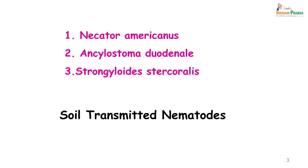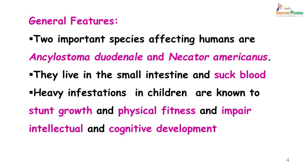All three of these worms are basically soil-transmitted nematodes. The two important species which affect humans are Ankylostoma duodenale and Necator americanus. They live in the small intestine and suck the host's blood. Heavy infestation in children is known to stunt their growth, reduce physical fitness, and impair intellectual and cognitive development.